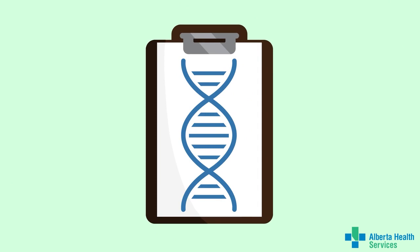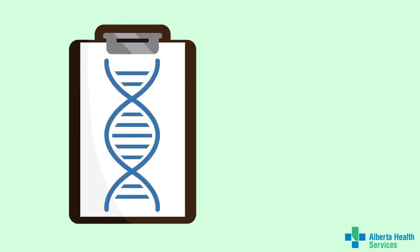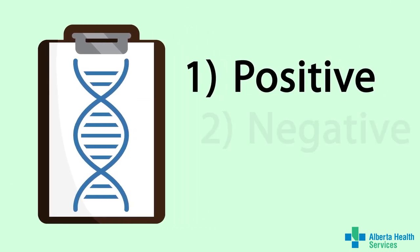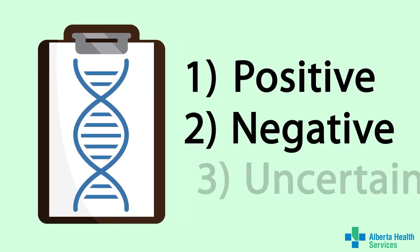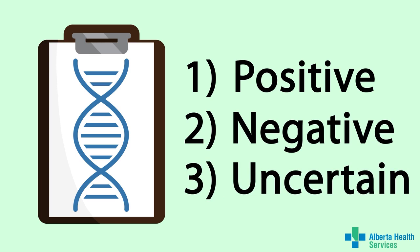Exome sequencing can give three types of results: positive, negative, or uncertain.